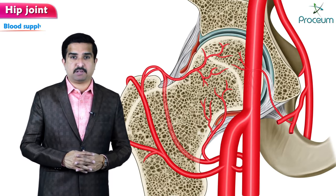In anterior dislocation, the patient's limb is held in external rotation, mild flexion, and abduction. Because it is an anterior dislocation, femoral nerve palsy can be present, whereas sciatic nerve palsy is associated with posterior dislocation. Anterior dislocation of the hip joint is pretty uncommon.